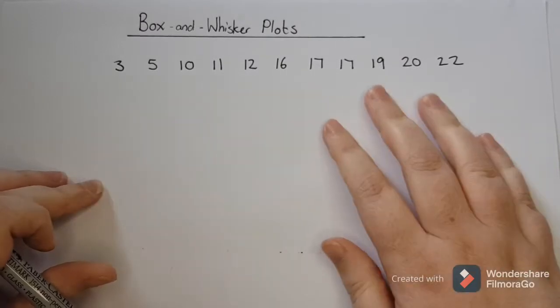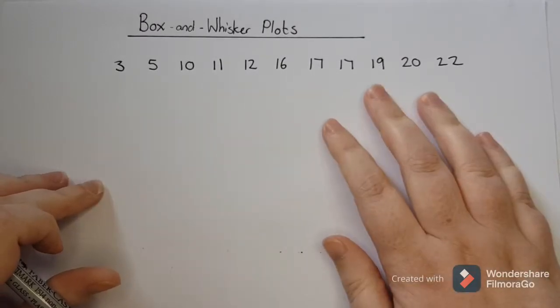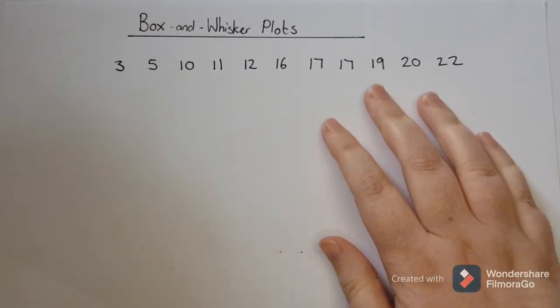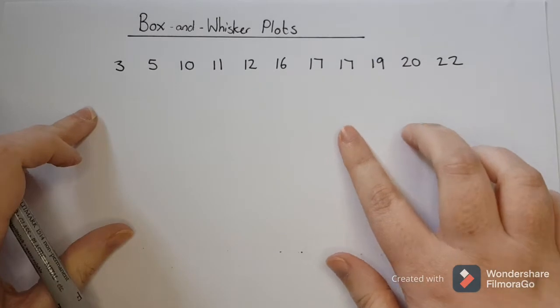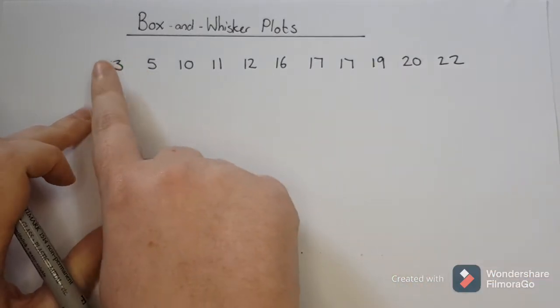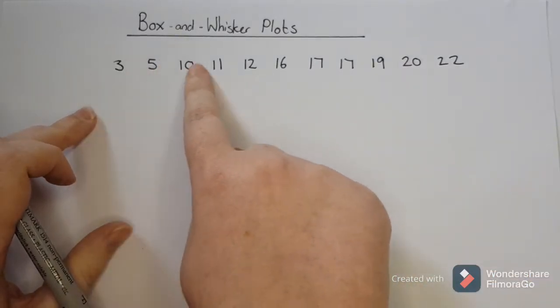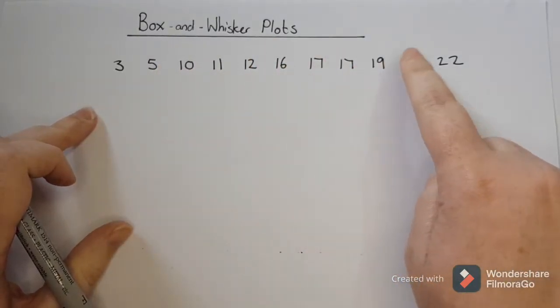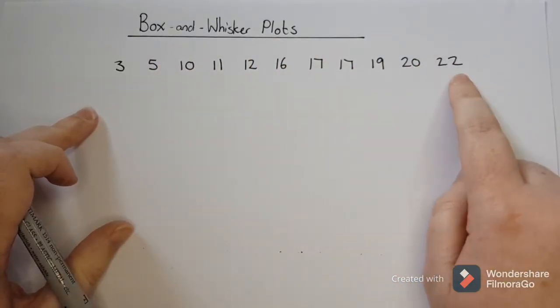So if I have a set of information like this, I need to first find the median. So I need to count up how many I have: 1, 2, 3, 4, 5, 6, 7, 8, 9, 10, 11.